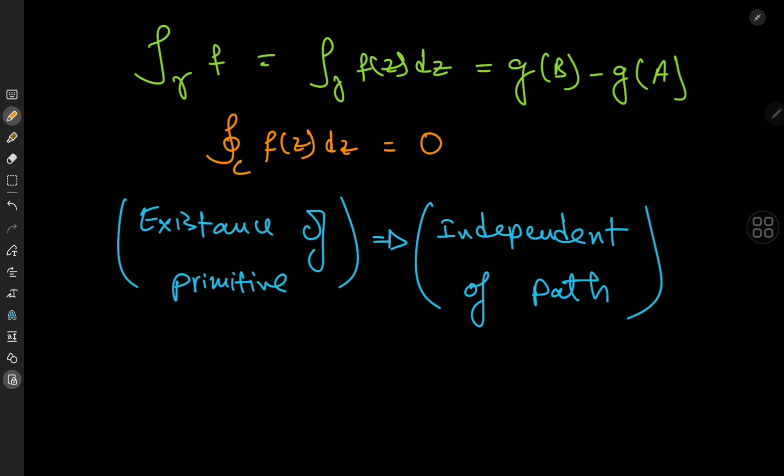So we conclude that the existence of an antiderivative implies the independence of path of the contour integral, which is extremely cool — so cool that we need a proof for it.